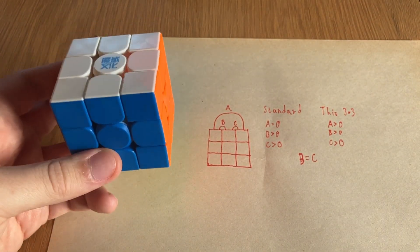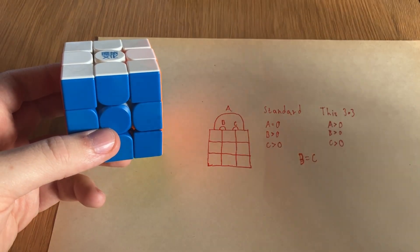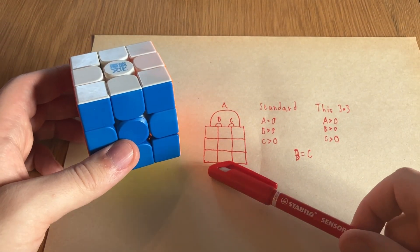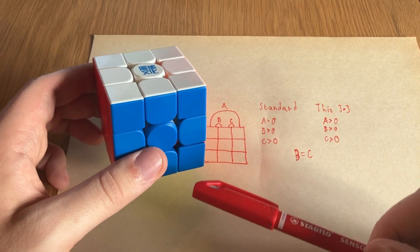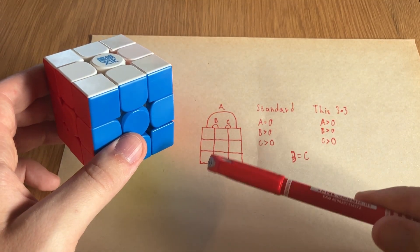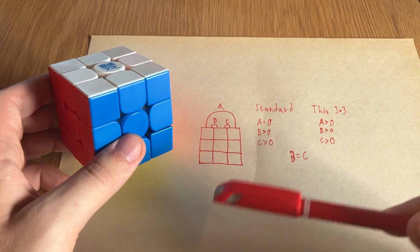So on a standard 3x3, we are able to control the friction between the outer layers and the middle layers. This is B and C, and they are both the same because of the symmetry. And A here is the connection between the outer layers directly, but it is always equal to zero on a standard cube. We have no straight connection.